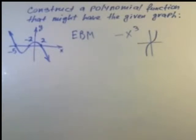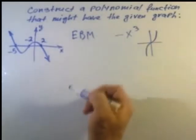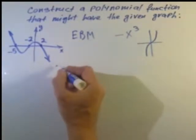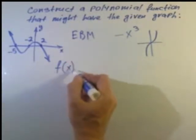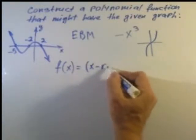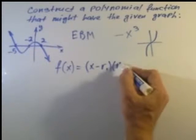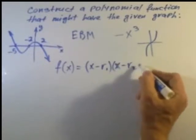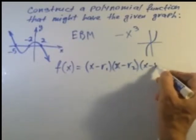The general factored form of the polynomial of third degree looks like that: (x minus r1)(x minus r2)(x minus r3).